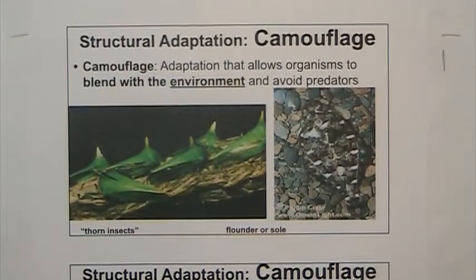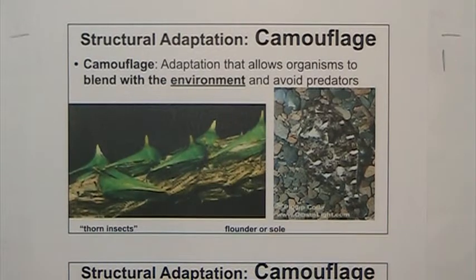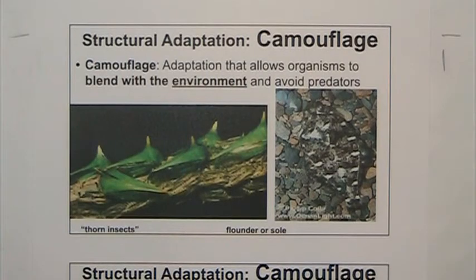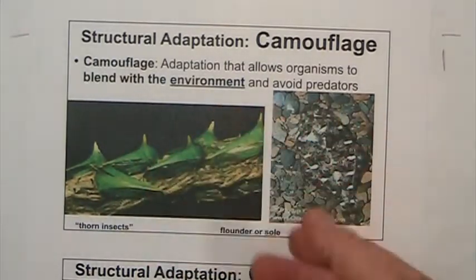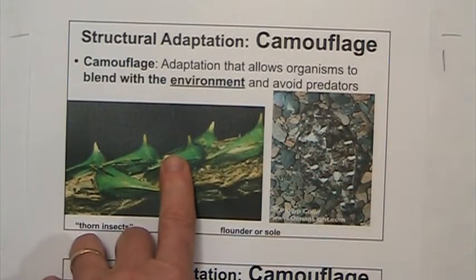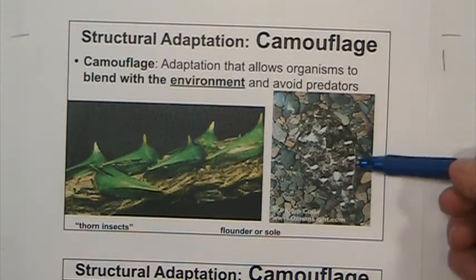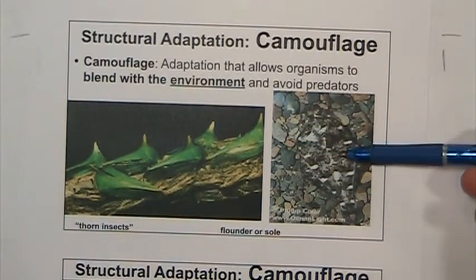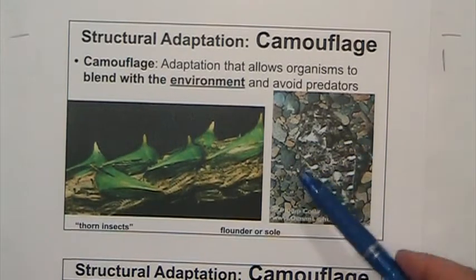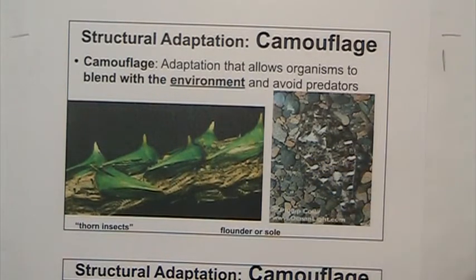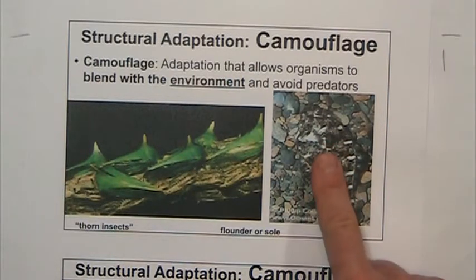Some adaptations fall into what we call camouflage — adaptations that allow organisms to blend with the environment. These are insects that look like thorns — a great way to avoid predation. Here you have a flounder, a fish that mimics the composition of the bottom. It can change colors — again, it's a way to avoid predation but also to sneak upon their prey. These are structural adaptations.